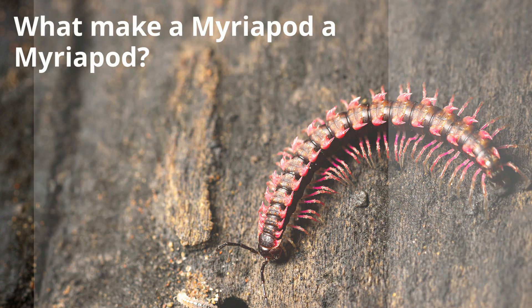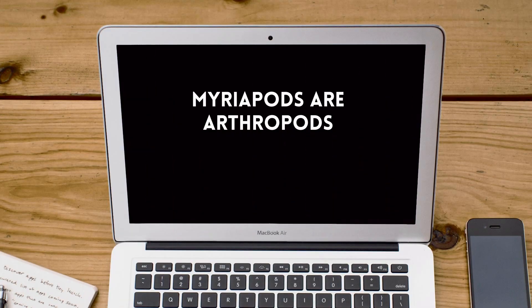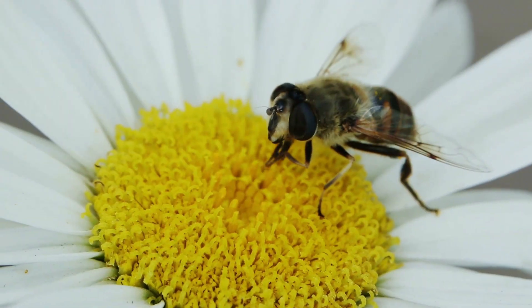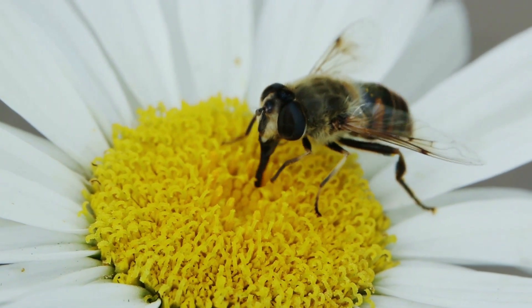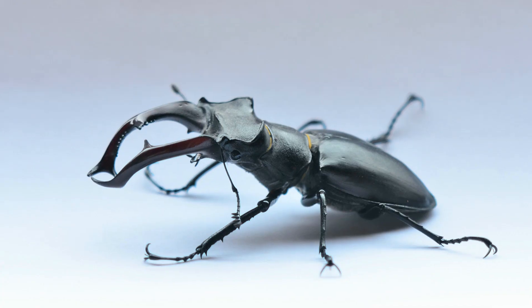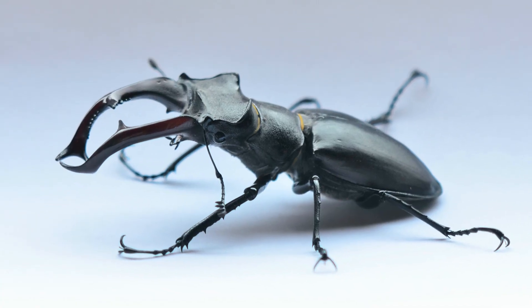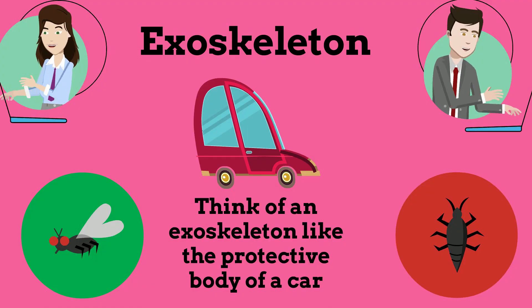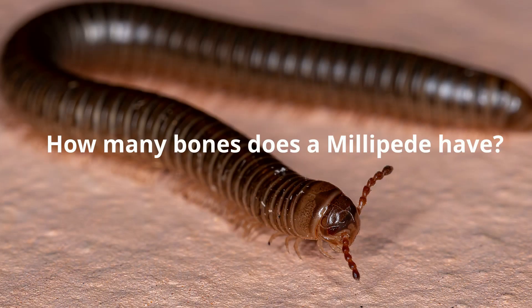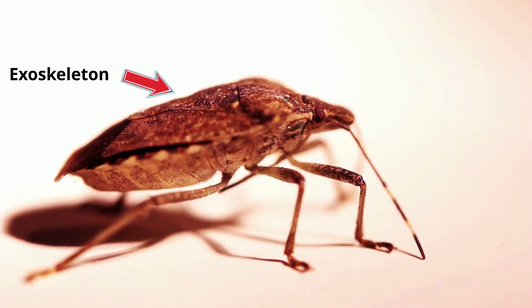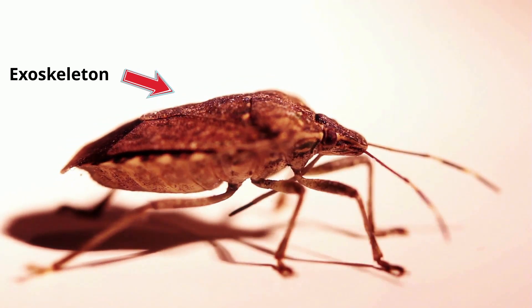First, Myriapods are Arthropods. All Arthropods have several traits in common. Let's take a look at these common traits. An exoskeleton. Remember the question from the beginning? The answer to how many bones does a millipede have is none. Arthropods do not protect their organs with a skeleton made of bones. Instead, they have a hard outer covering called an exoskeleton.